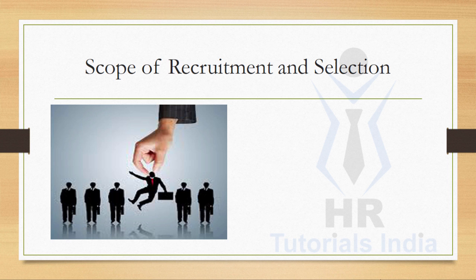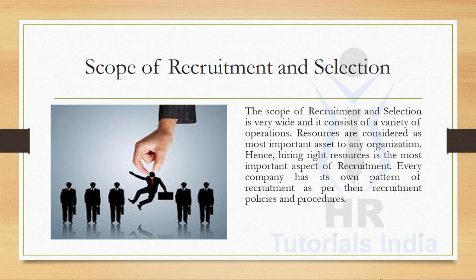The scope of recruitment and selection is very wide and it consists of a variety of operations. Resources are considered the most important asset to any organization. Hence, hiring the right candidate or right resource is the most important aspect of recruitment. Every company has its own pattern of recruitment as per their recruitment policies and procedures, which means the scope of recruitment and selection plays a vital role in any company, because hiring the right resource is the most important part for any organization.